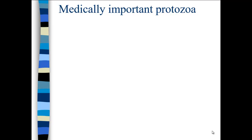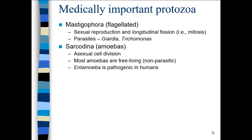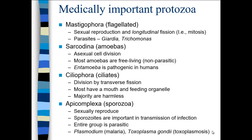Where we stopped on Tuesday, we were talking about medically important protozoa. Among these, we have flagellated parasites like Giardia and Trichomonas. We have amoebas like Entamoeba histolytica, which is pathogenic. We have ciliophora, which are ciliates — the majority like paramecium are harmless. And then we have apicomplexa, which are sporozoa, including important infections like Plasmodium, which causes malaria, and Toxoplasma gondii, which causes toxoplasmosis.